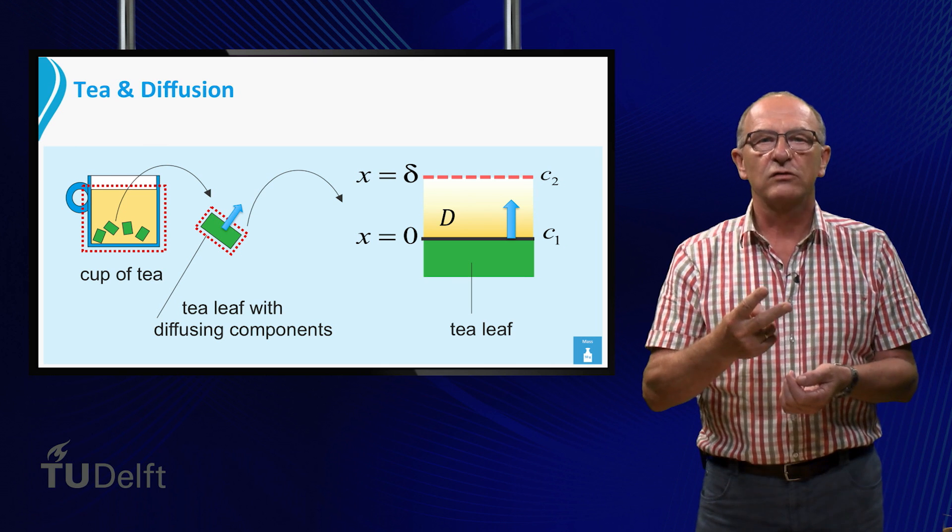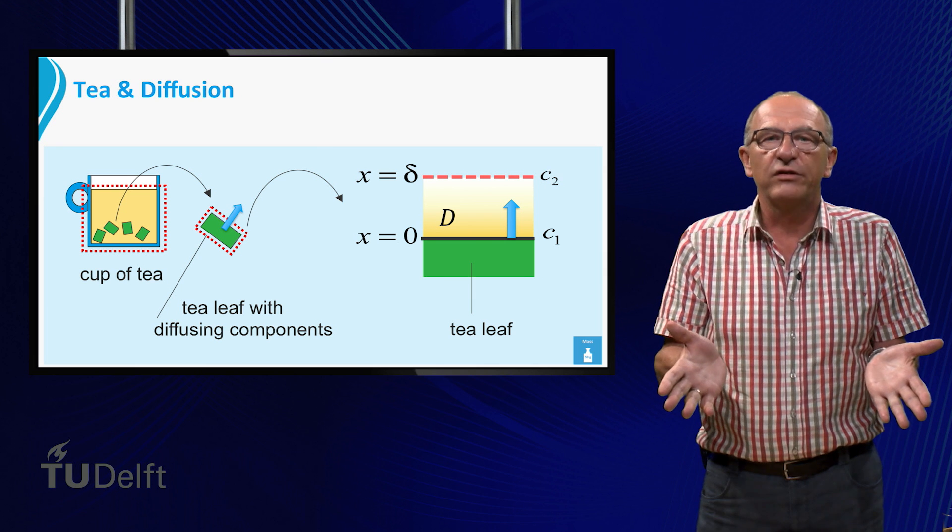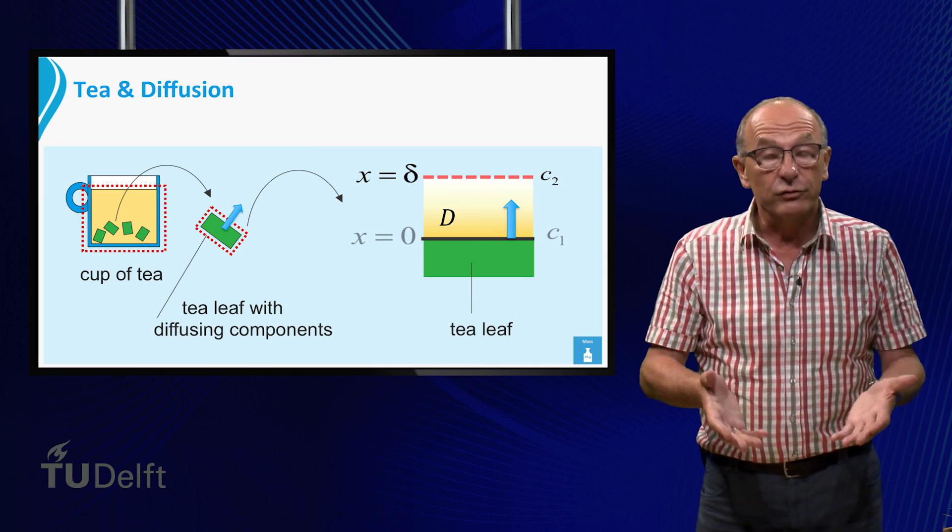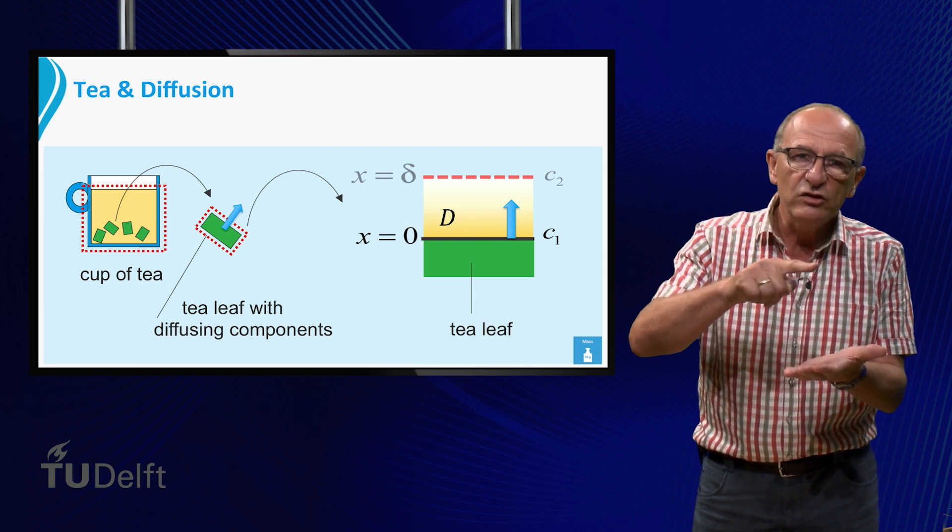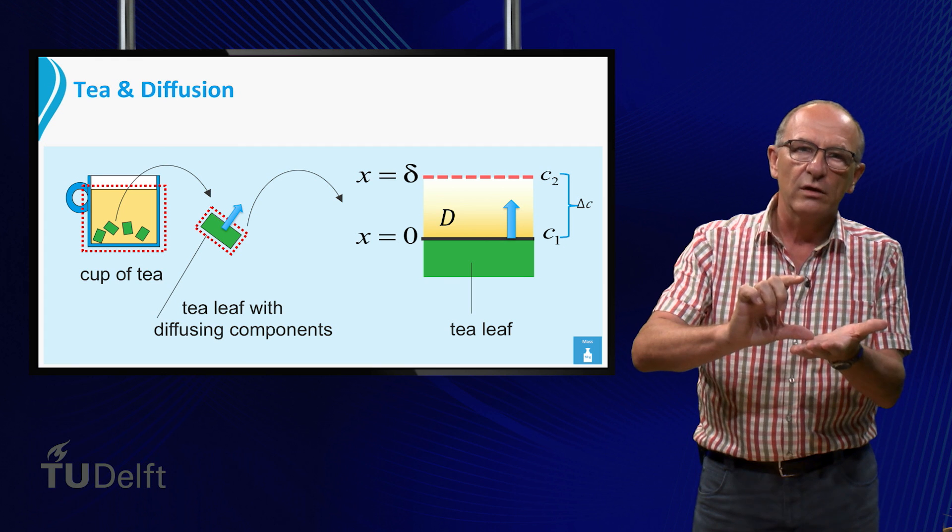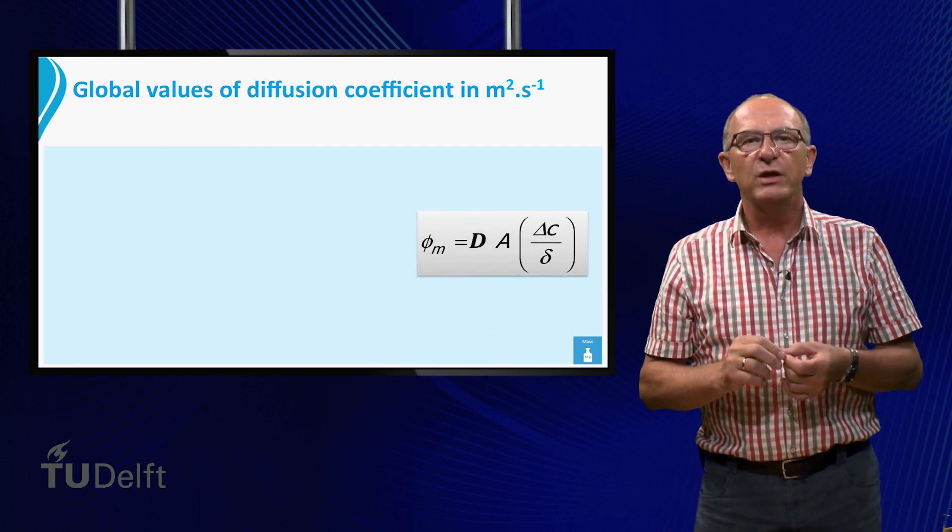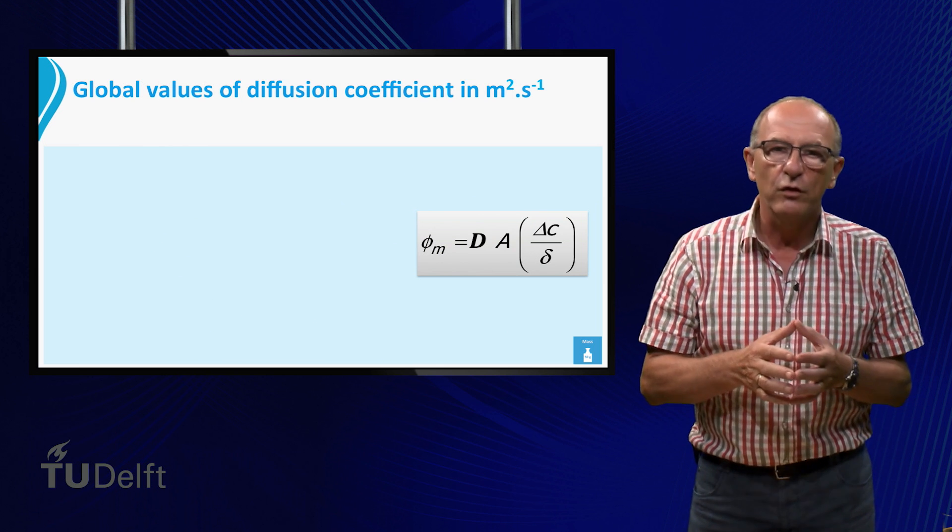Then there are two more things. First of all, the driving force, because why is the material transferred? Because the concentration c1 here is higher than c2. So delta c is the driving force here. Then there is one property about which we haven't said anything, and this is what we call the diffusion coefficient d.